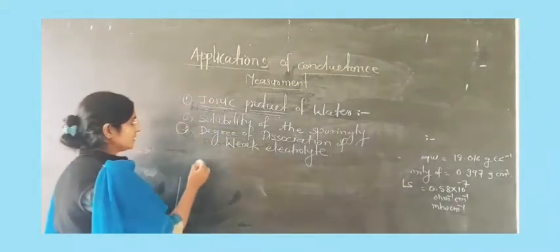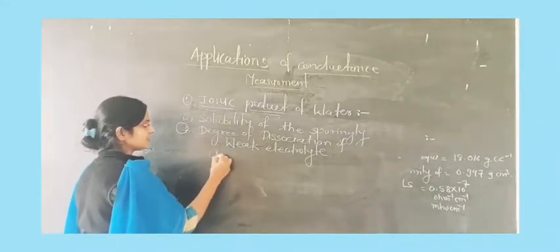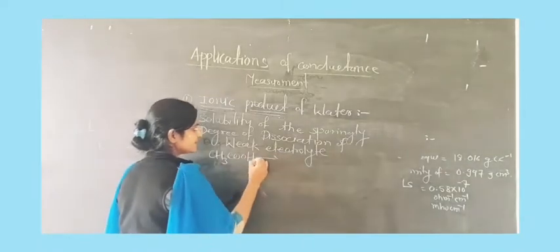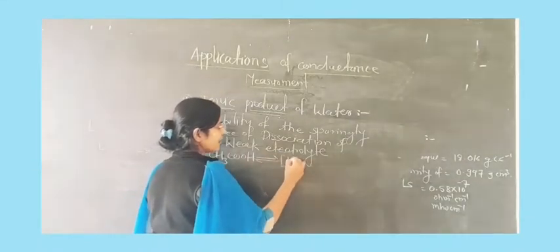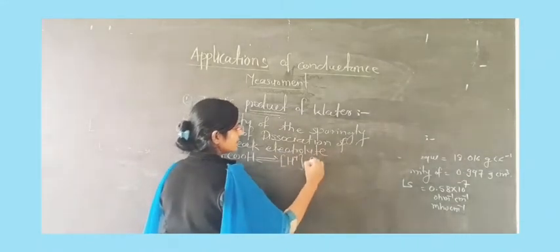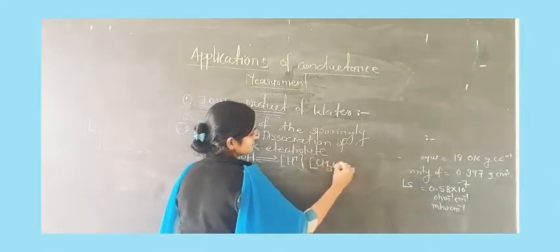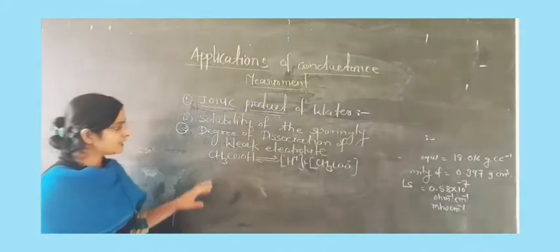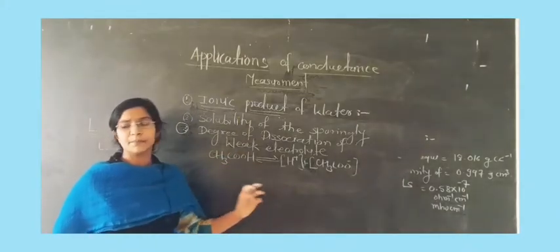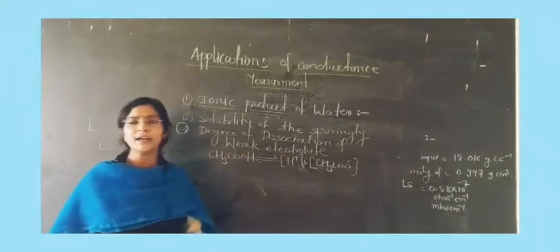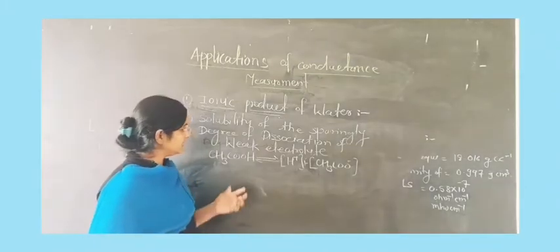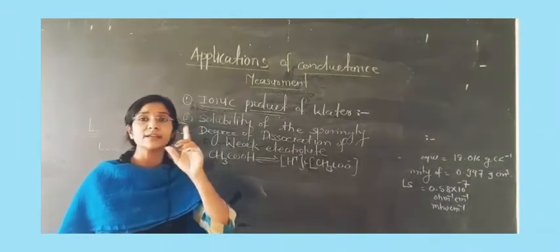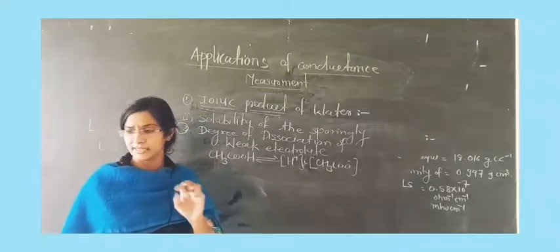In this case, the example of acetic acid is given. Acetic acid is very famous and it dissociates partially in the solvent. This partial dissociation can play a very important role in finding out the dissociation pattern of the weak electrolyte. Therefore, conductance measurement is very important in this case.